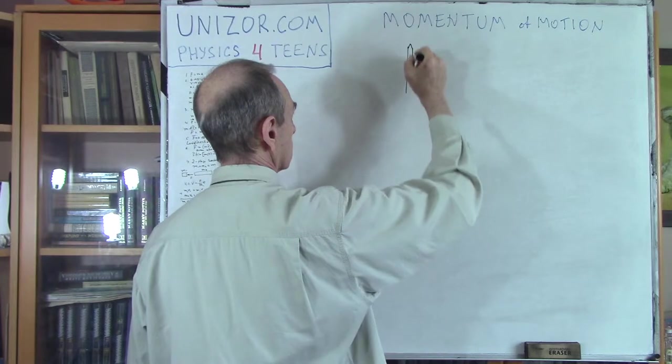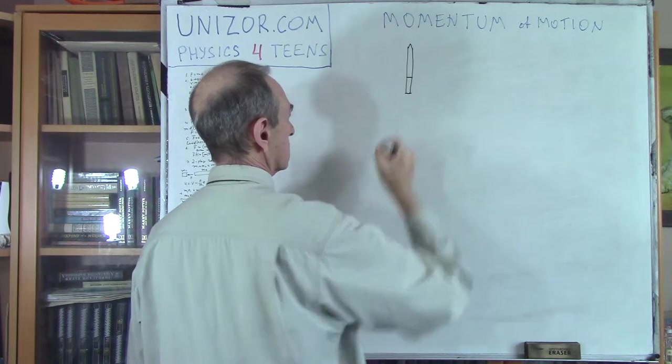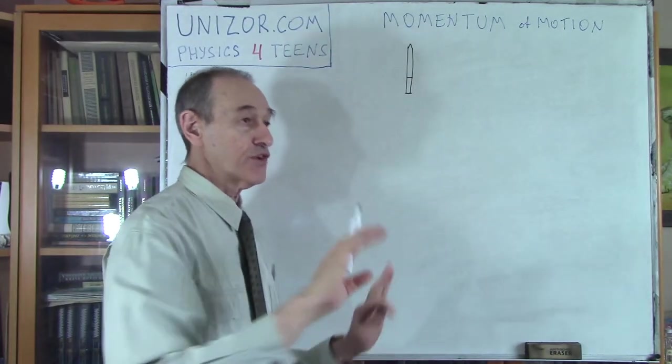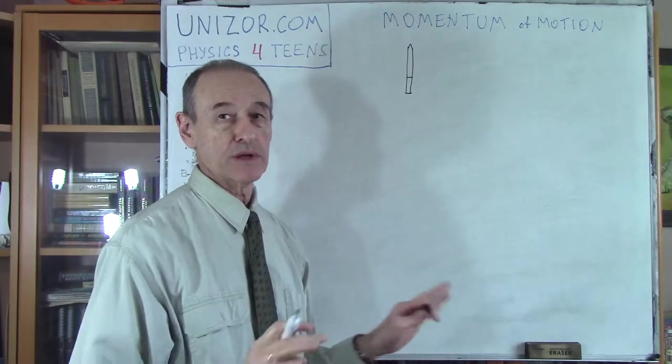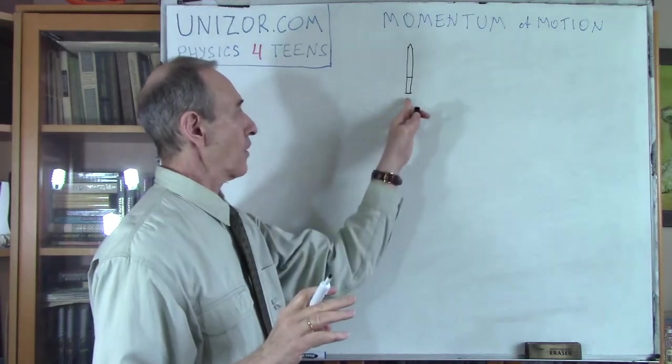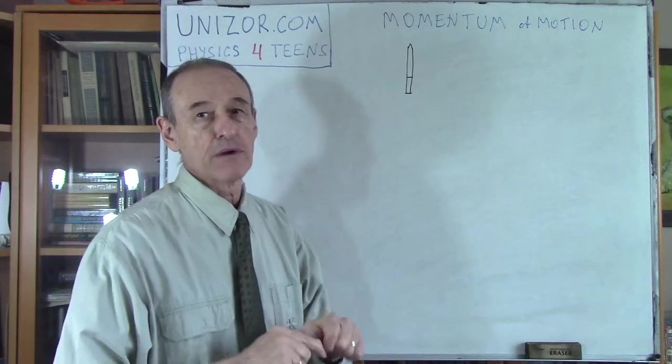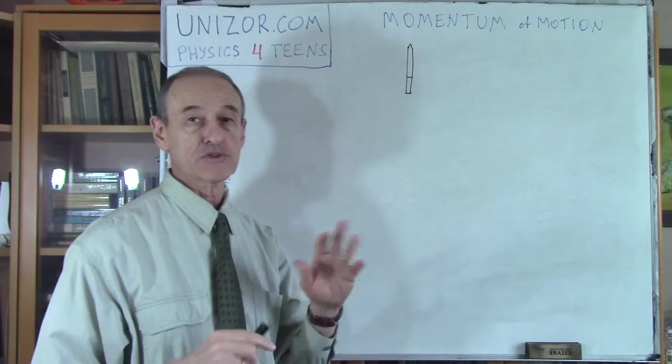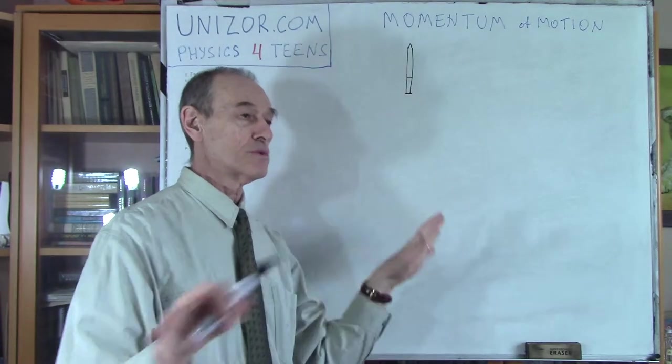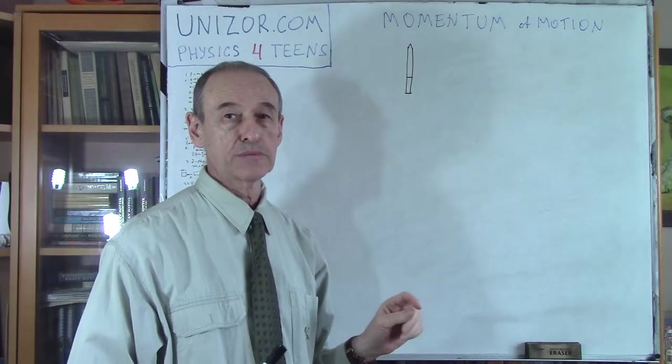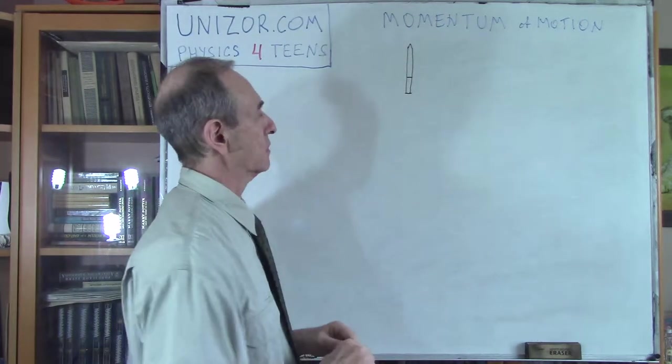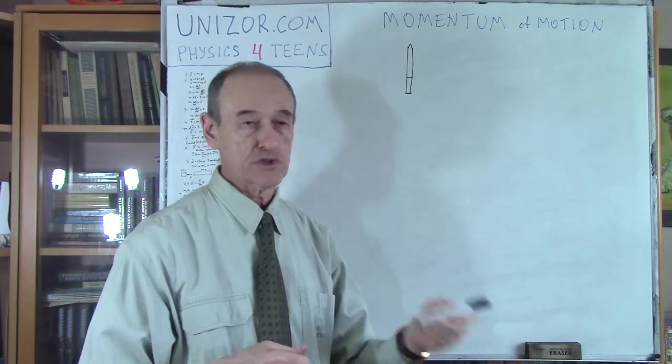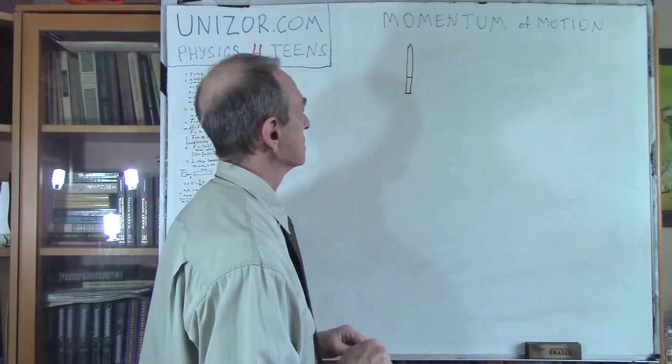Now, what I will do next is exemplify this with a very important example which will show actually how important this particular quantity is. So far, it all seems to be just manipulation with formulas which doesn't make much sense. But this example will show you how deeply this momentum of motion is actually embedded in our world. Let's consider a two-stage rocket. This is the rocket, and it has two stages.